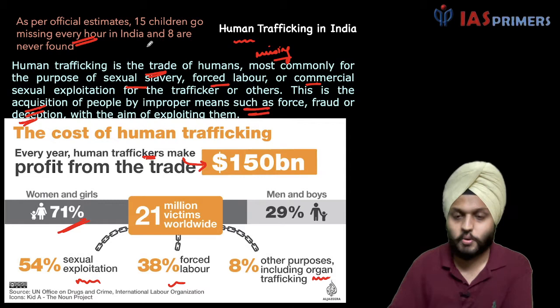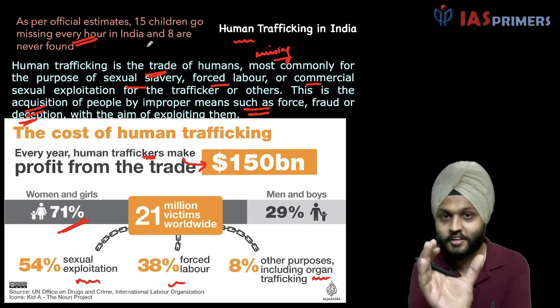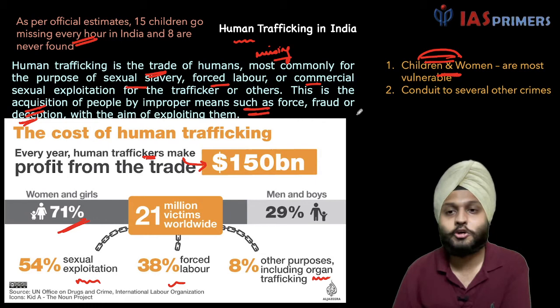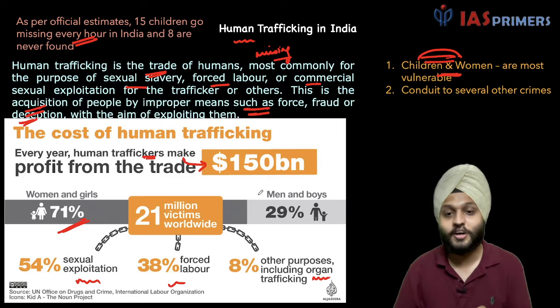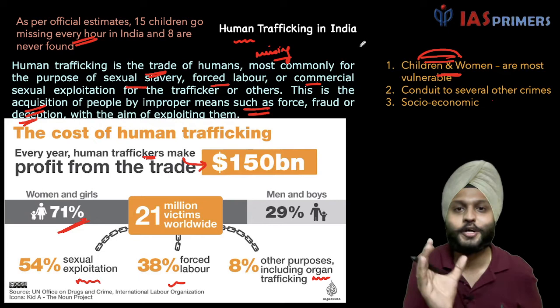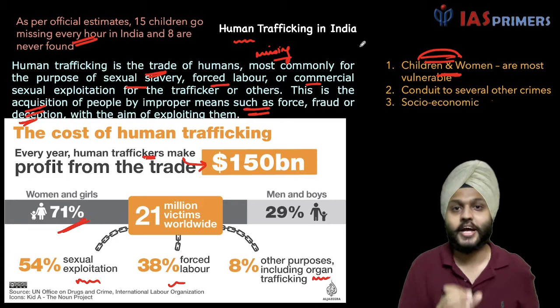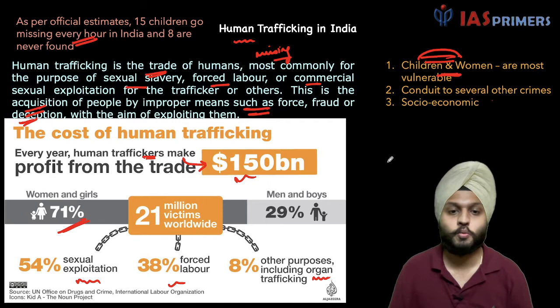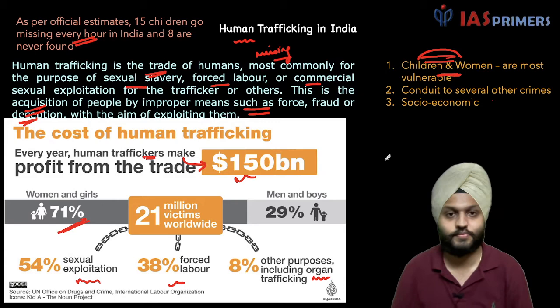So this is a very serious problem. Let us note some important identifications. First, it is the children and women that are most vulnerable — that is why we see most government schemes centered over these issues. Second, it is a conduit to several other crimes: it is not just human trafficking, it is also forced labor, sexual slavery, illegal organ trade, organized crime — anything can be linked to human trafficking. Third, there is a socio-economic dimension to it — the right of the child, the right of the family to live together, the problem of poverty, and the economic trade worth 150 billion dollars — so both social evils and the economic aspect are related here.